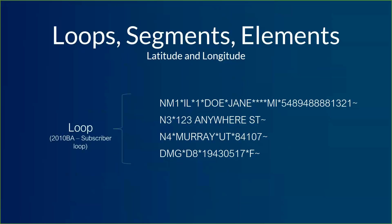The loop is the most general of the options. For example, here I've got the 2010BA subscriber loop — every piece of data in that section is all related to the subscriber. If you look at the top line, there's some patient name information and a member ID. The next two lines have address information, and at the bottom we have a date of birth and a gender. So this is all subscriber-related stuff, and it all falls into a single loop.